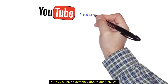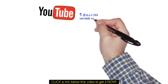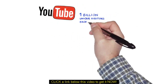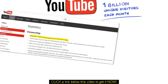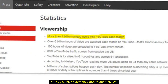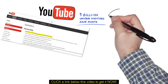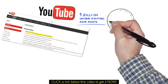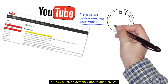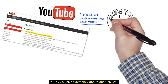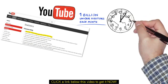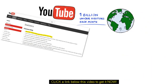Did you know that YouTube gets over 1 billion unique visitors each month to its website? Now you do. And did you know that over 6 billion hours of videos are being watched each month on YouTube? That's almost one hour for every person on Earth.